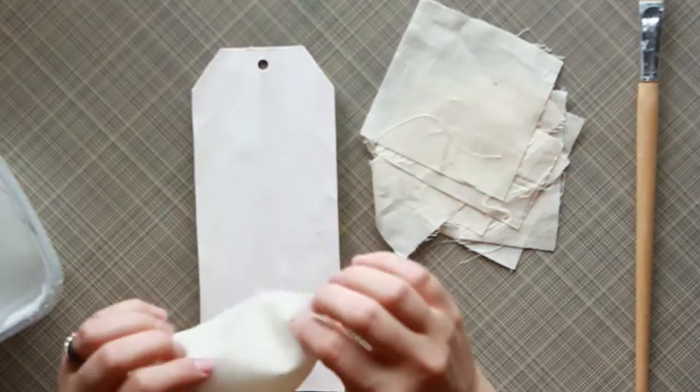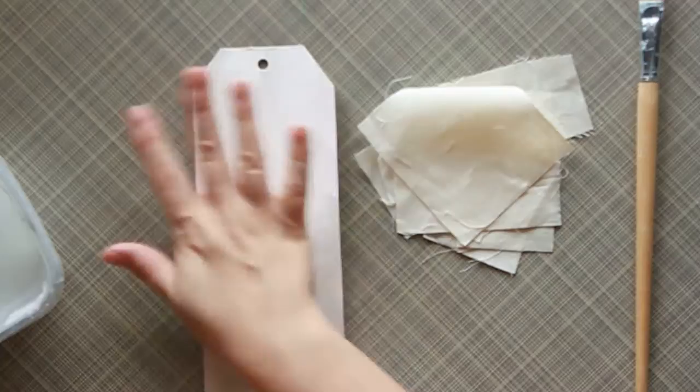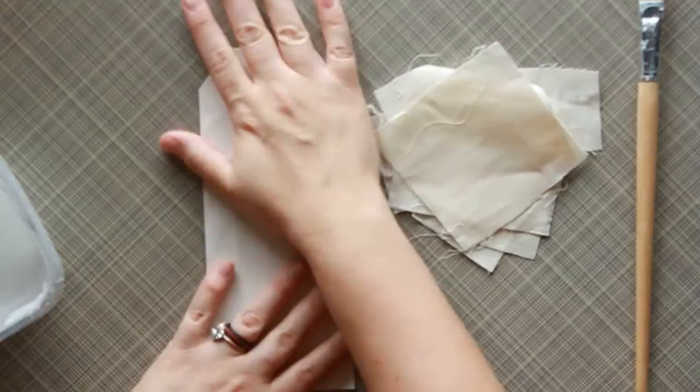So the fabric that I have today, I went ahead and cut it into just random pieces, squares, rectangles, really doesn't matter. I just like working with smaller pieces because it's easier to maneuver on here versus just lay a sheet down and then try to scrunch it or try to decorate with it.